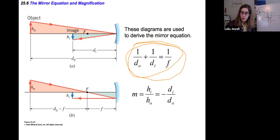If we know two of these variables, like the focal length of our mirror and the object distance, then we can solve for the image distance.